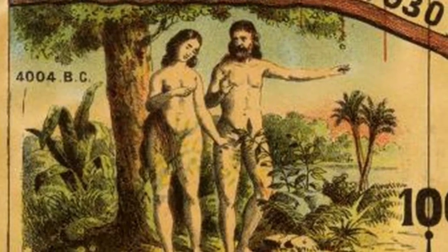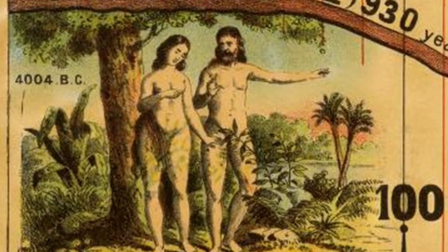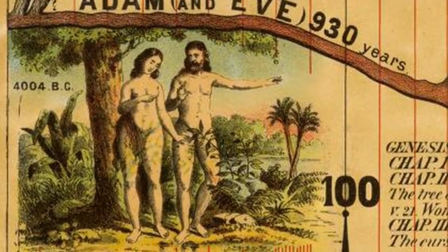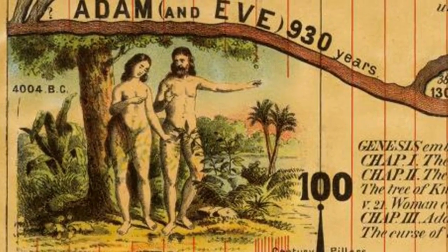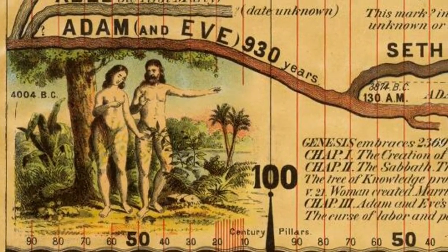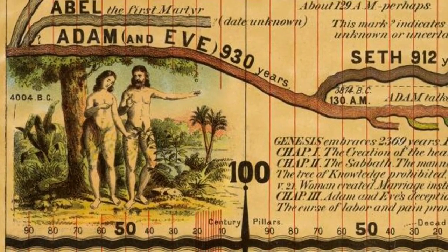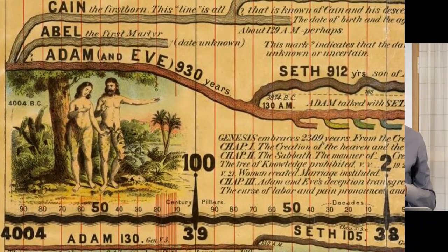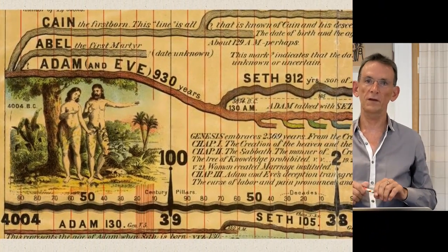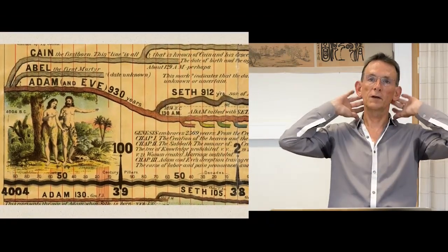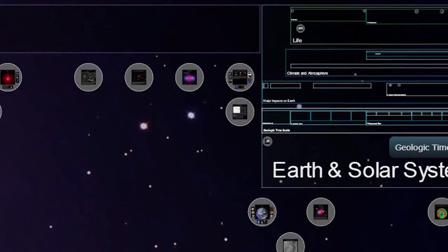It starts in 4004 BC — those familiar with geology will know why — which apparently is when God created the Earth at 9 o'clock on Monday morning. It goes forward from there right up to the present day. As it goes up, we start to see more and more linkages being formed between these separate branches, between these separate chronologies, producing essentially one single story, one single chronology. And that impulsive move to create a single chronology, to make all of the world fit into a single story, is still very much there today.